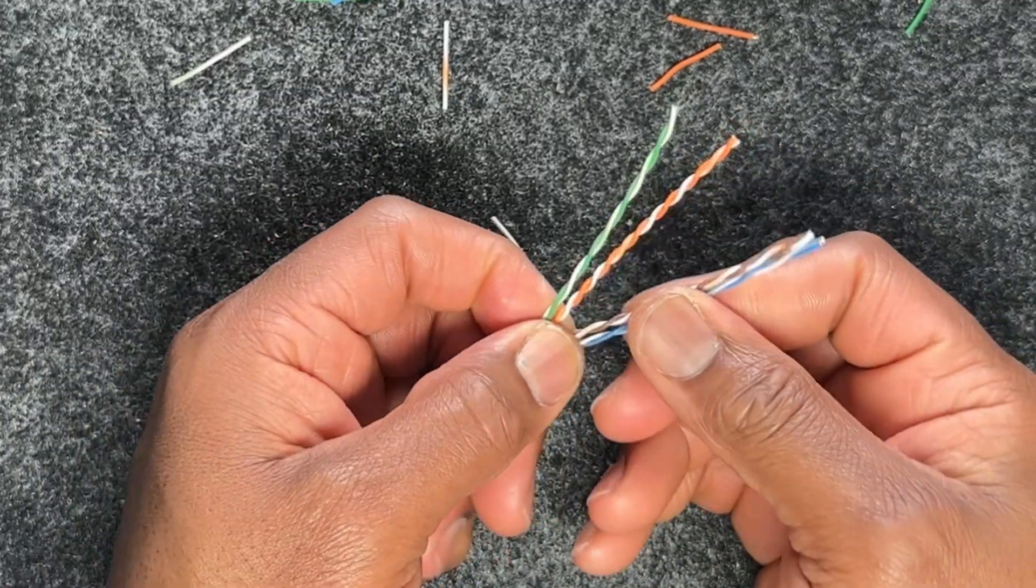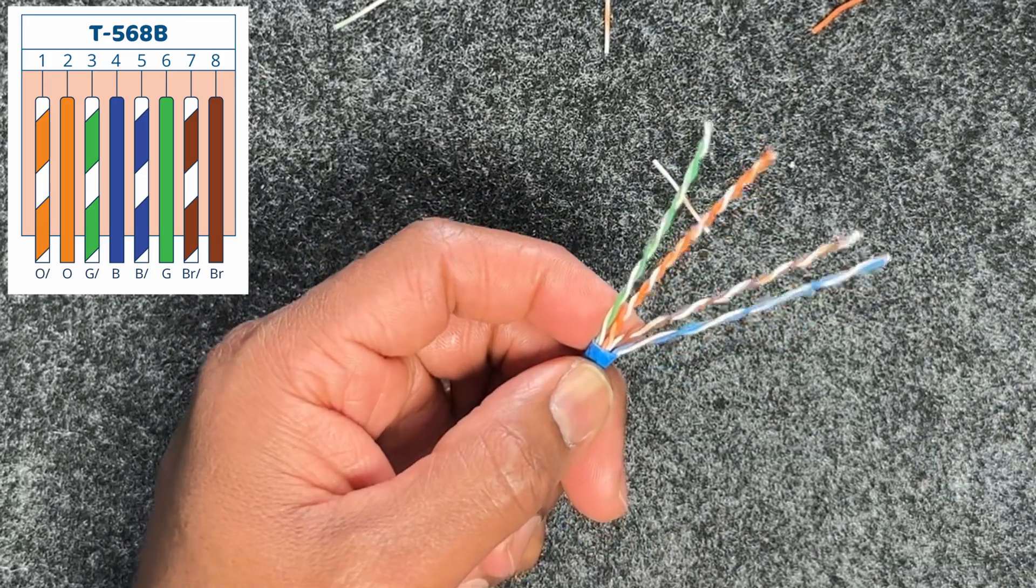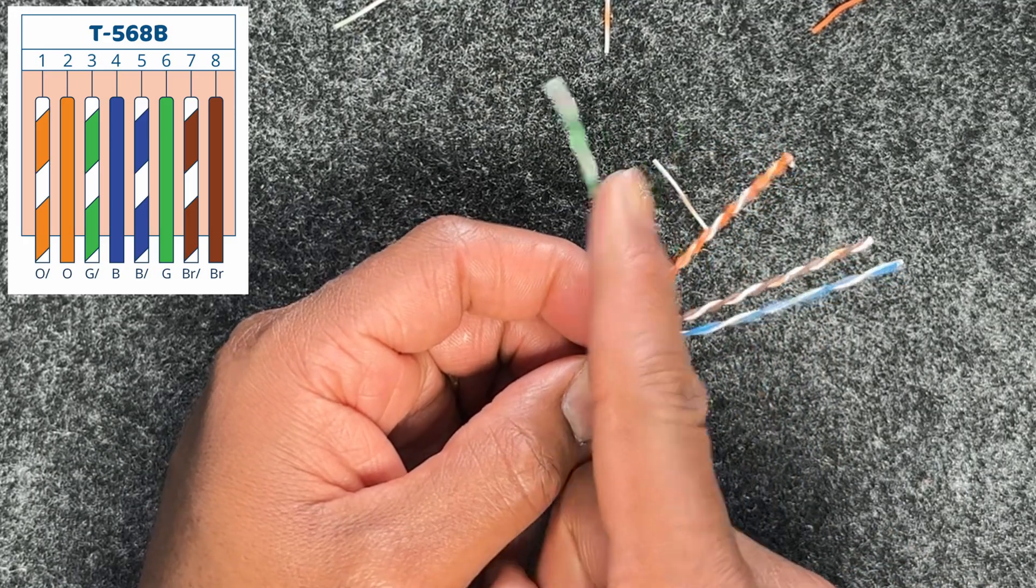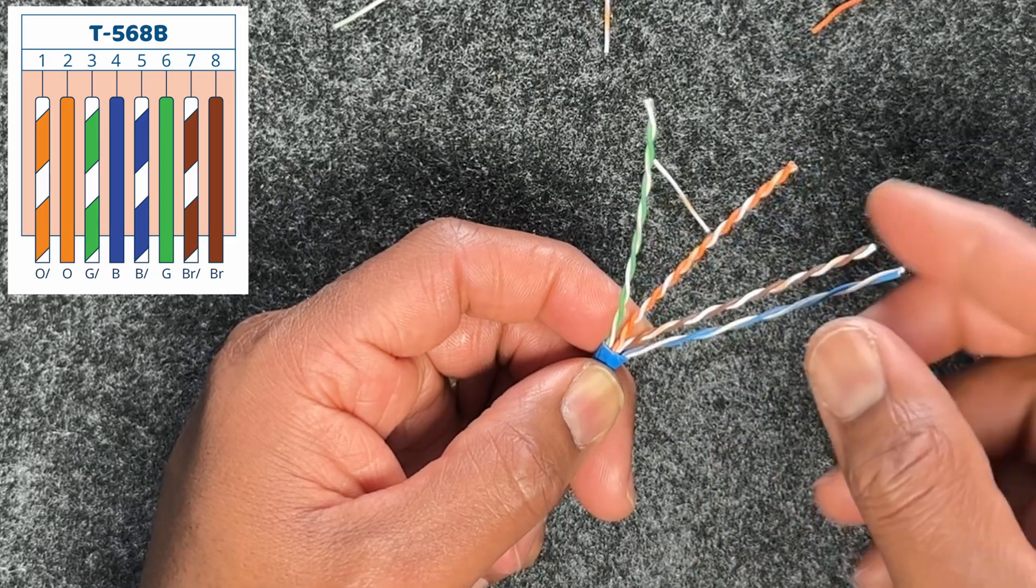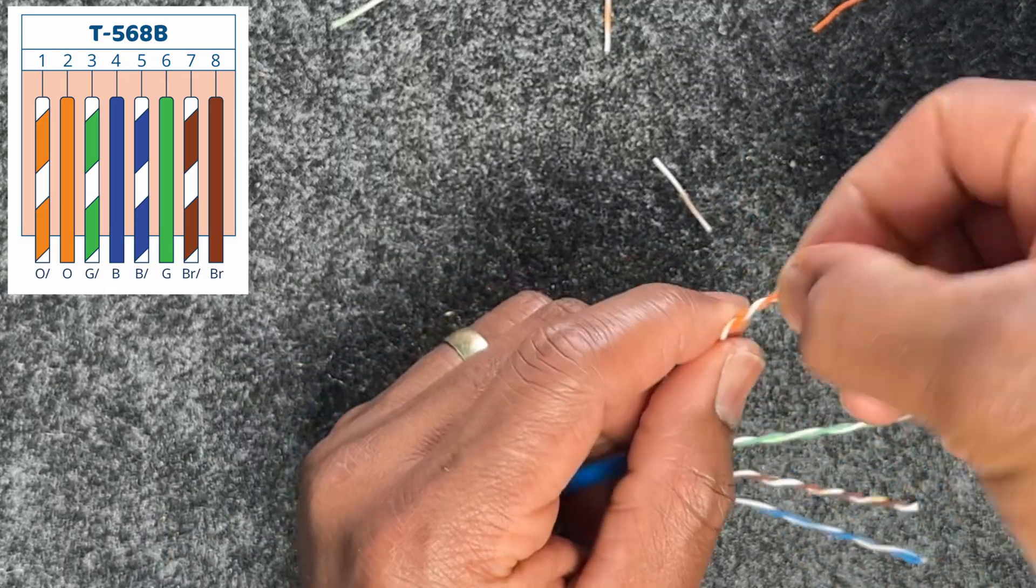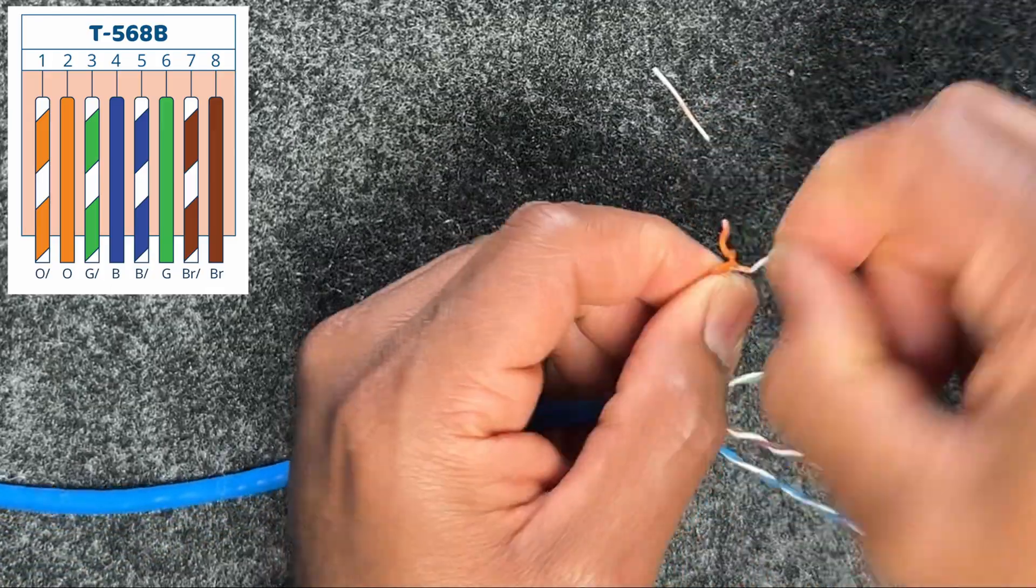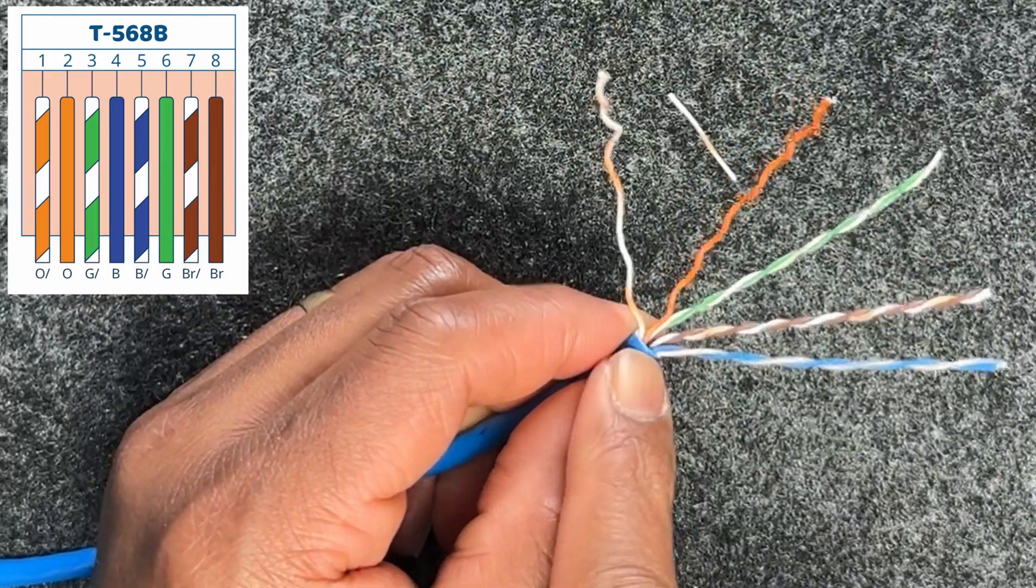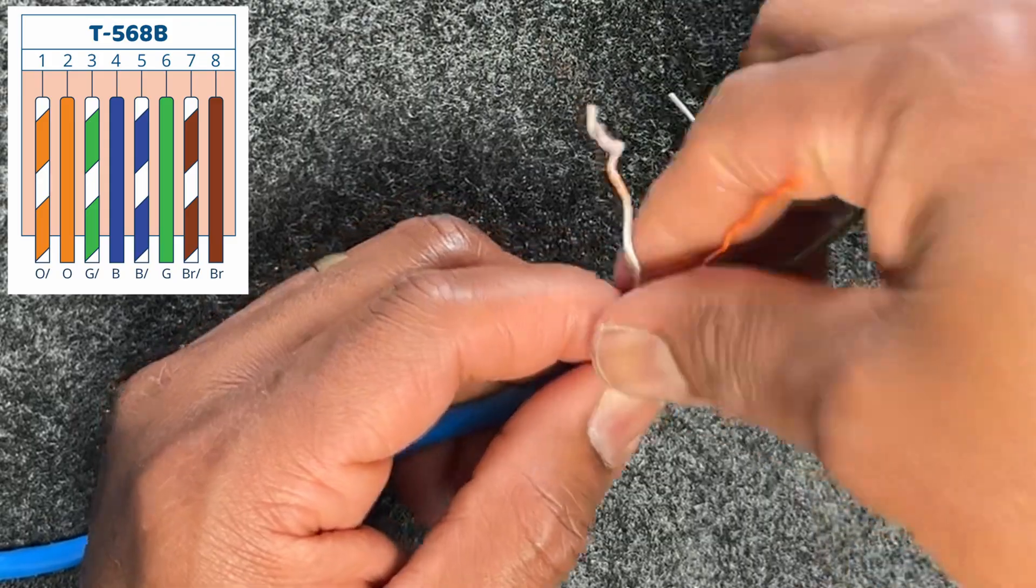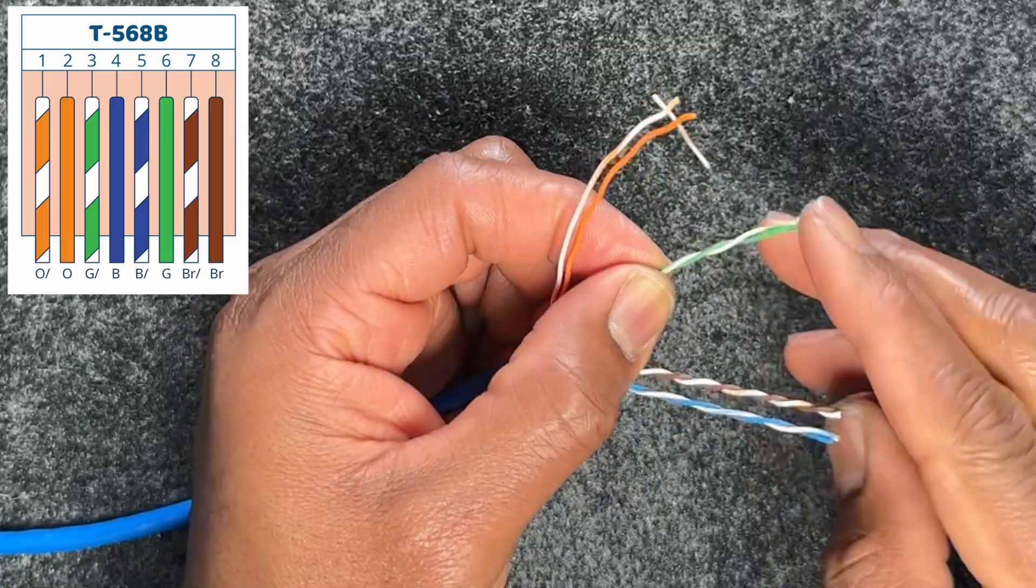Because we're doing 568B, my pin one is going to be white orange. The difference between the A and the B scheme is these two. Anywhere I started with the green, I'm going to start with the orange. That's the difference. The blue and the brown remain the same. So this time, I'm going to start with my orange pair. The white orange is going to be pin one. I unraveled it just before the jacket, but went one more twist where it met the jacket.